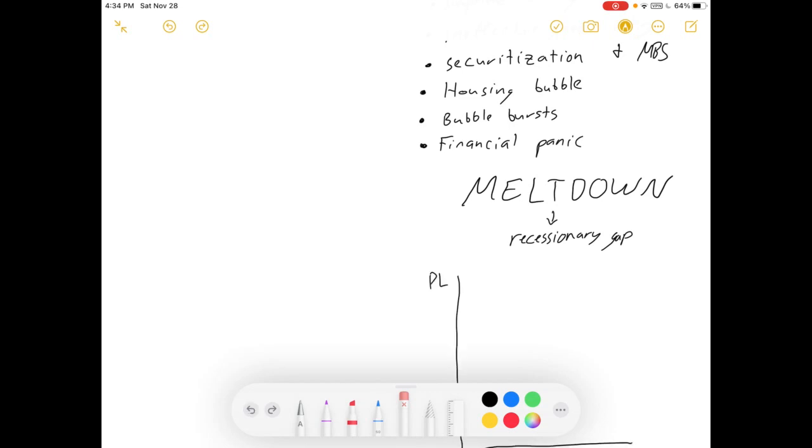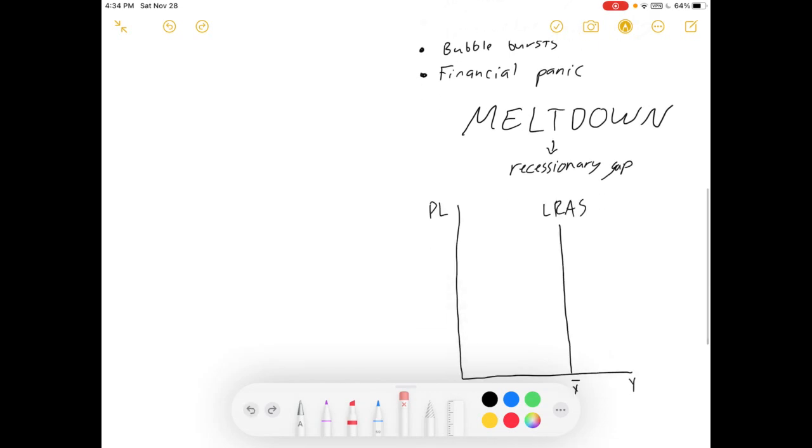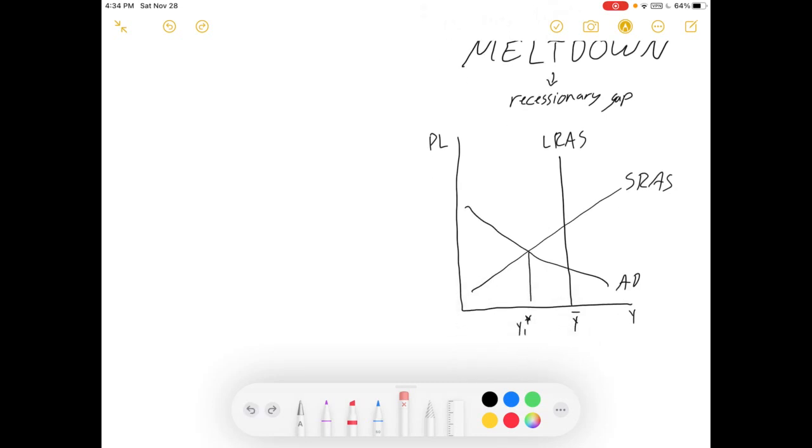So this meltdown, among other things, meant we found ourselves in a recessionary gap. Here's long-run aggregate supply, our potential GDP, short-run aggregate demand. Current GDP is less than potential GDP. There we have it, we're in a recessionary gap. We have high unemployment, stuff like that.